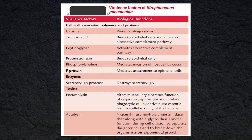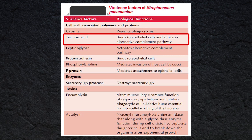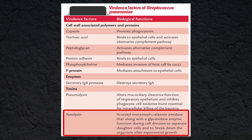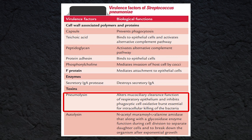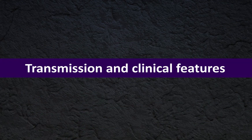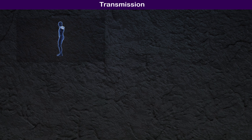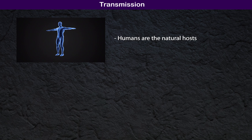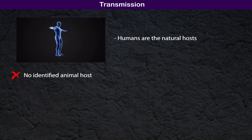Moreover, S. pneumoniae has another important surface component called teichoic acid in the cell wall. It is also called C substance or C polysaccharide. Choline-binding protein A, autolysin, and pneumolysin are the other virulence factors of pneumococci.